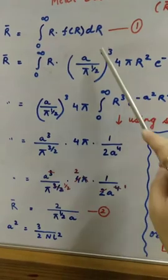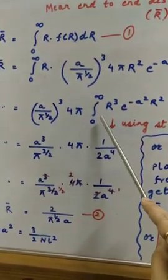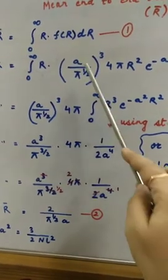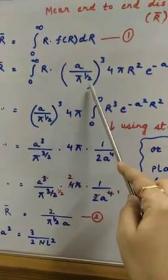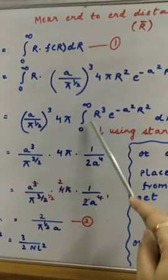After placing this value, the constants, we always say that when we take integration, we will take out the constants. And after then we will integrate within the limits.